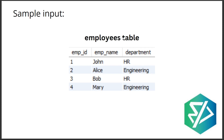This is the first table — the employee table. There are four records, and you have the employee ID, employee name, and department. There are two departments: HR and engineering.